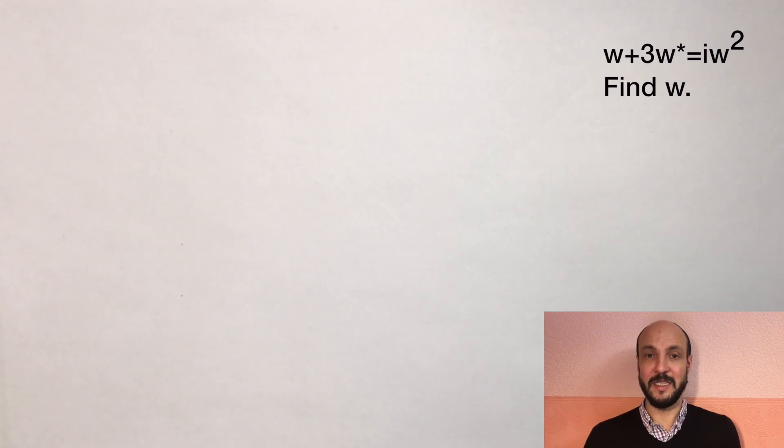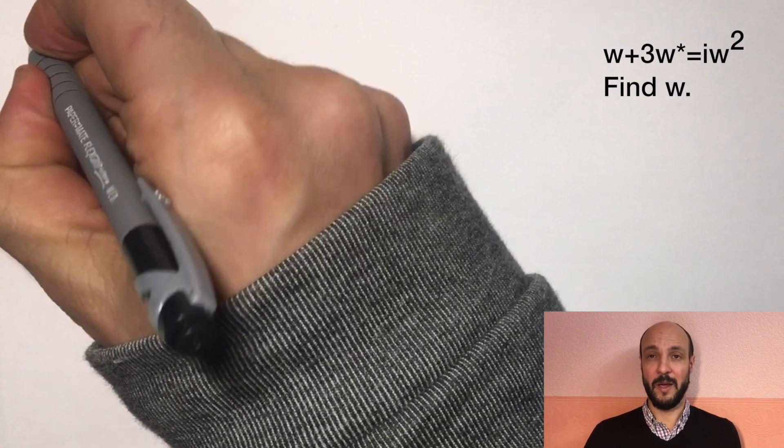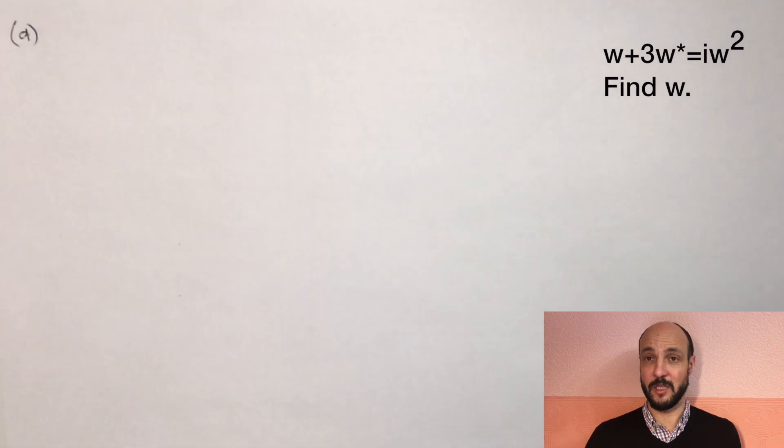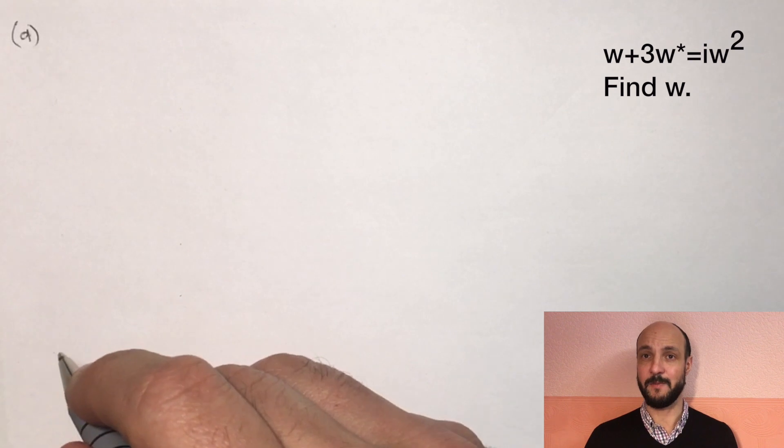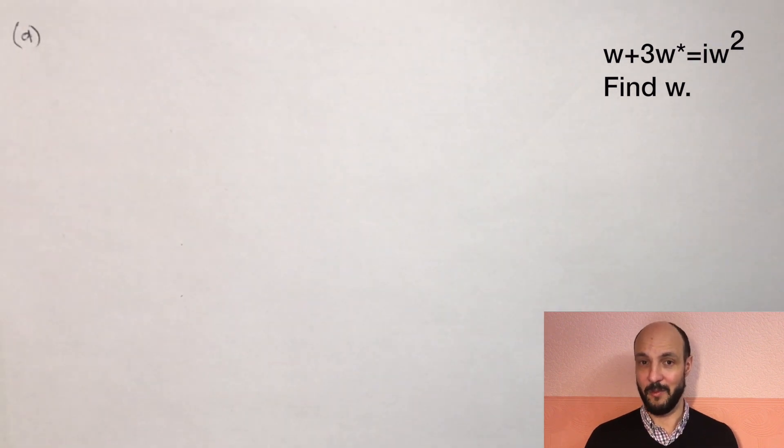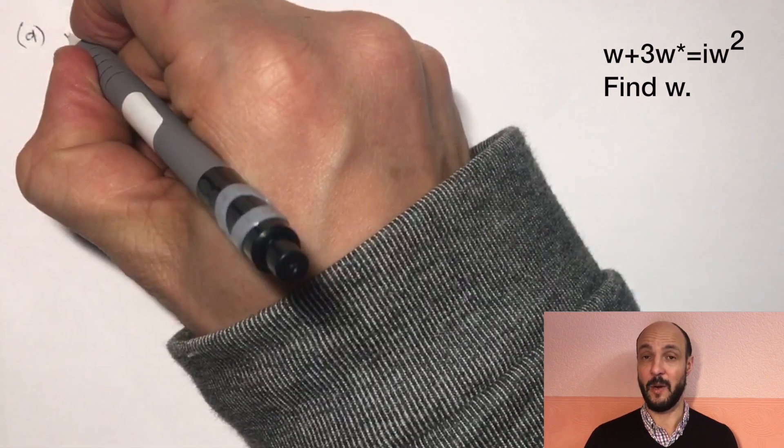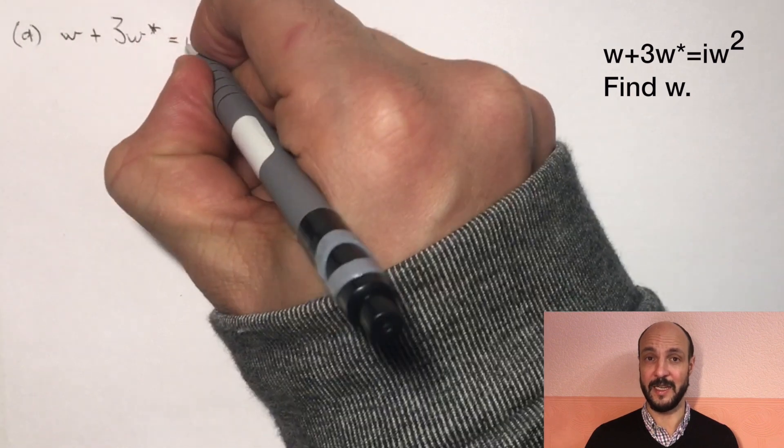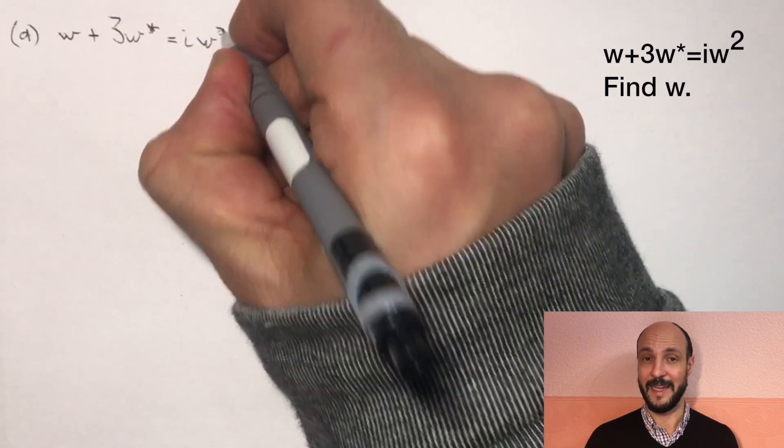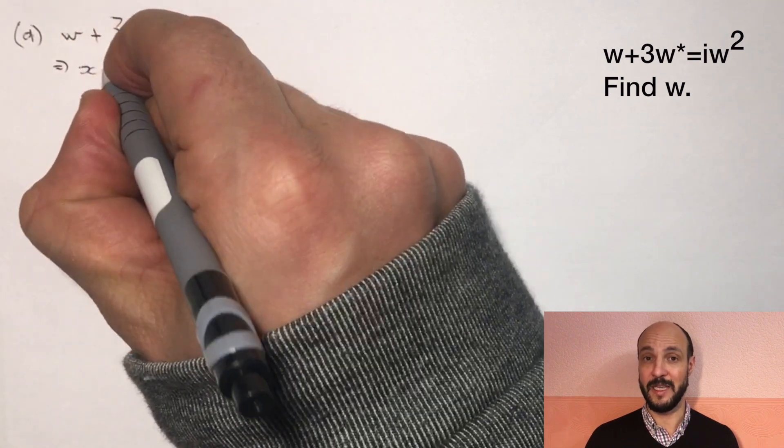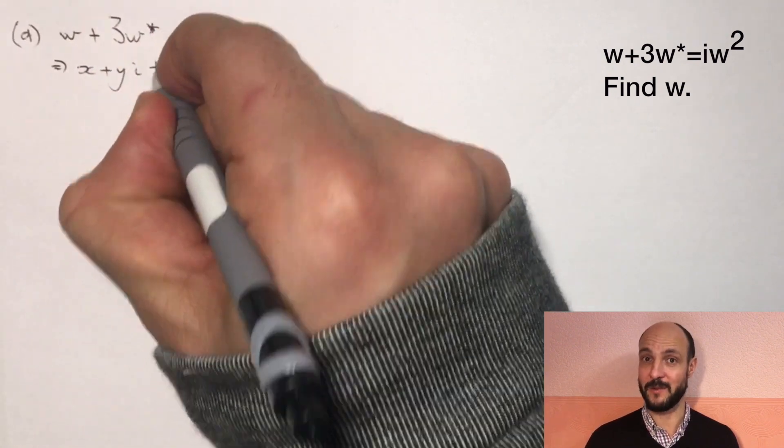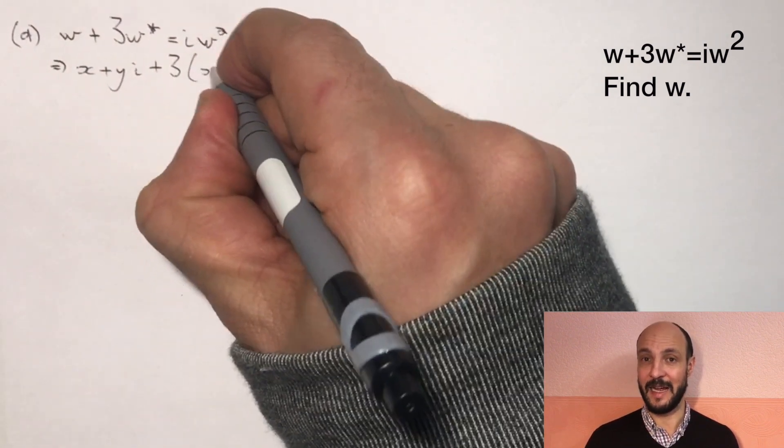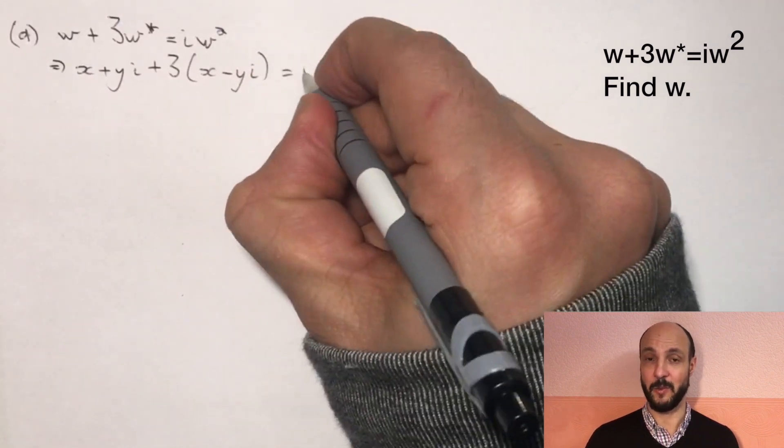OK, so in the first part we need to find out W and we're given an equation. The way we're going to do this is everywhere we see W, we're going to replace it by a complex number written out in full as X plus Yi, and then we can just move the equation around a little bit and we'll be able to find out what the values of X and Y are, which are totally real. So we start by writing W plus 3W* equals iW² as X plus Yi plus 3 times X minus Yi equals i times X plus Yi times X plus Yi.